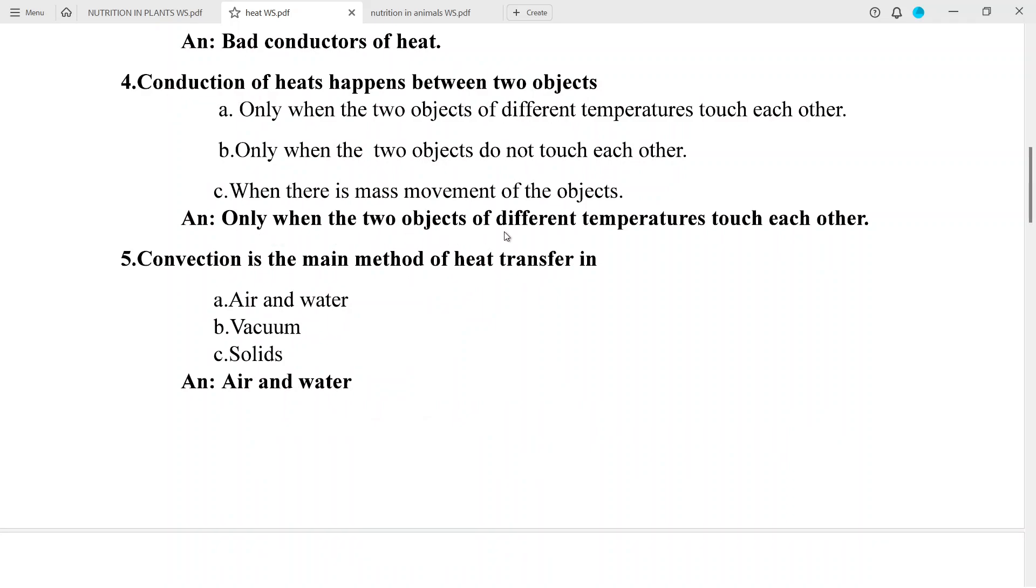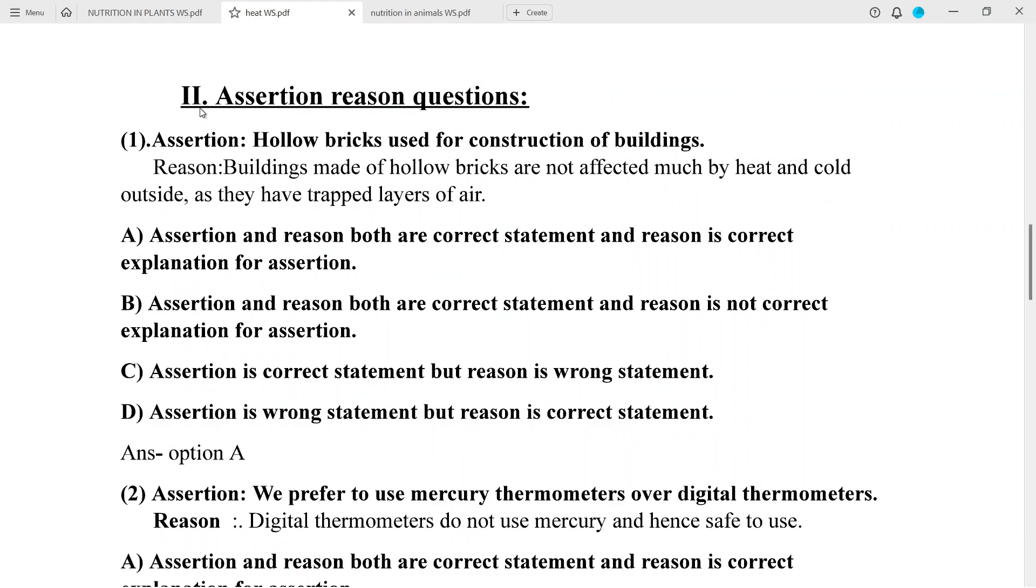Question 4: Conduction of heat happens between two objects answer: only when the two objects of different temperatures touch each other. Question 5: Convection is the main method of heat transfer in answer: air and water.